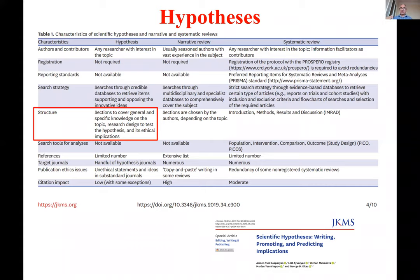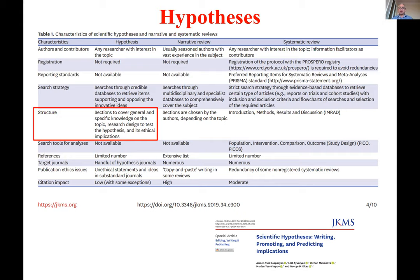A scientific hypothesis as a standalone research study has its own structure. We usually compare scientific hypotheses with narrative reviews and systematic reviews. Be sure that your scientific hypothesis is based on comprehensive literature searches, but the difference is that a hypothesis needs only a limited handful of references, whereas a narrative review may be based on more than 100 references, and a systematic review is based on thousands of references, some excluded and only a limited number used for qualitative and quantitative analysis.